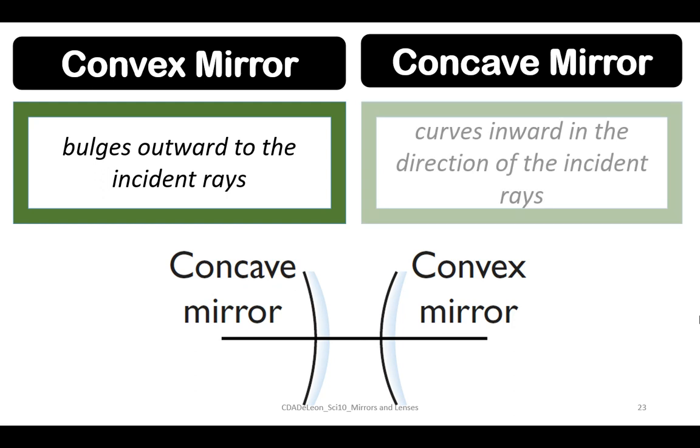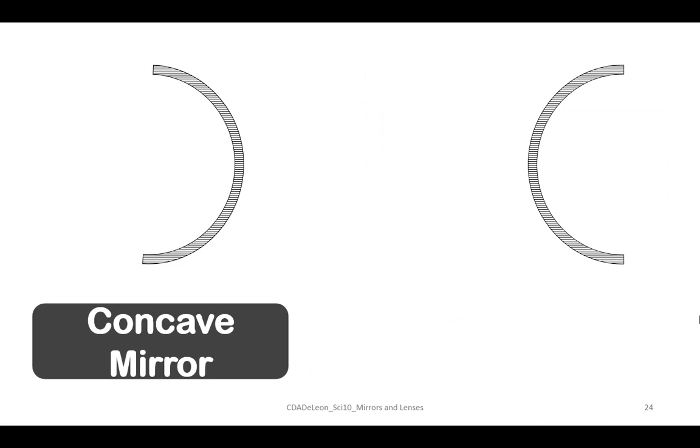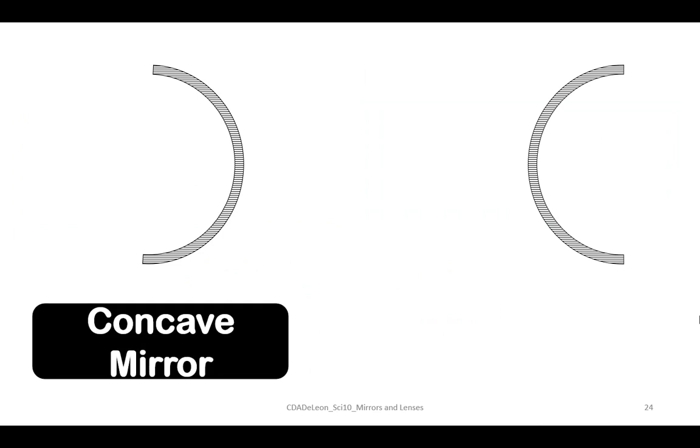Now, let's discuss the spherical mirrors. Convex mirror bulges outward to the incident rays, while concave mirror curves inward in the direction of the incident rays. A mirror is part of a smooth and highly polished reflecting surface.